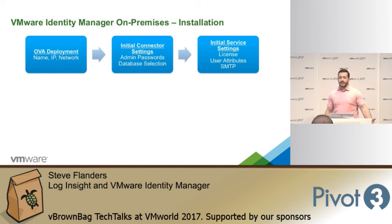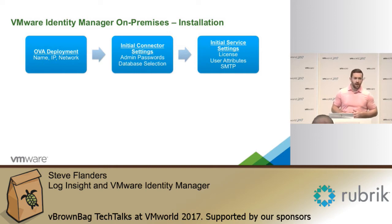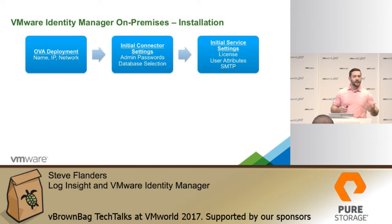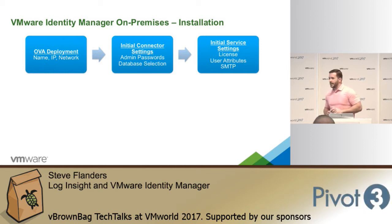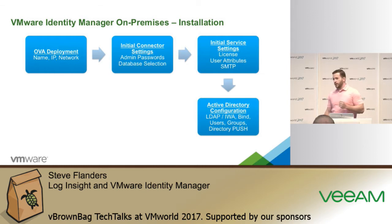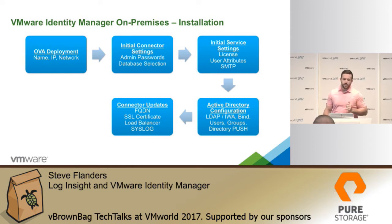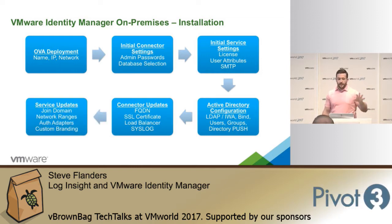You'll then go through an initial configuration wizard — very common for VMware products — where you set things such as the admin passwords and select your database. Then you go through initial service settings if you're going to license it. VIDM is free for Log Insight for authentication purposes, but VIDM actually supports more than authentication — it has a content catalog, and EUC uses it as part of Workspace ONE, which costs money. Given this is a Log Insight and VIDM talk, there is no license needed. User attributes, SMTP settings, syslog settings, and all the advanced stuff can happen through the UI as well. You'll also need to perform your Active Directory configuration and any connector settings — such as SSL offloading or load balancer configuration.